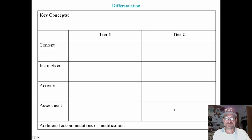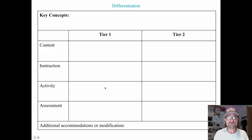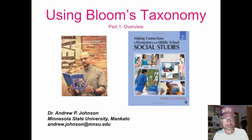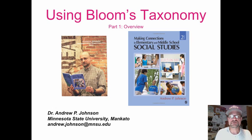Starting out with two levels is recommended. If you really want to challenge yourself, you can bring it up to three levels. That is the end of this basic overview using Bloom's taxonomy, specifically focused on tiered assignments.